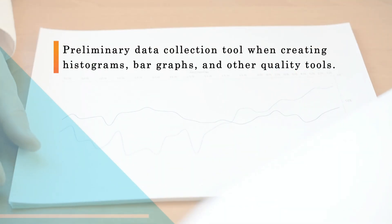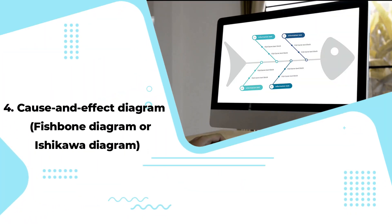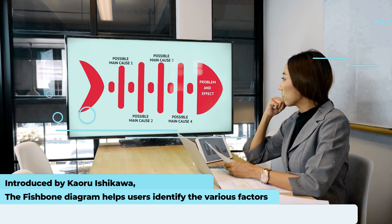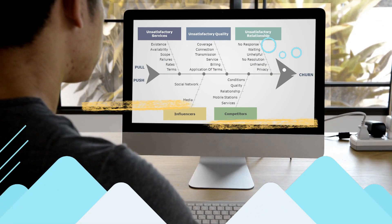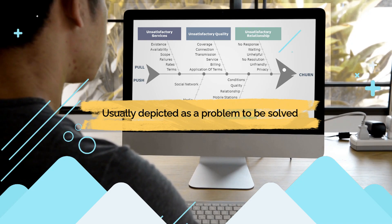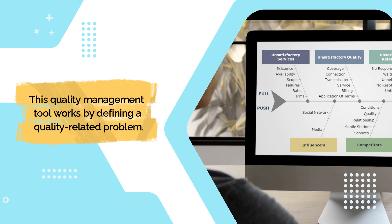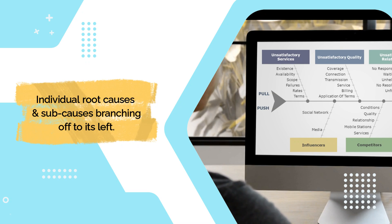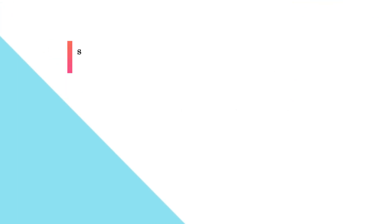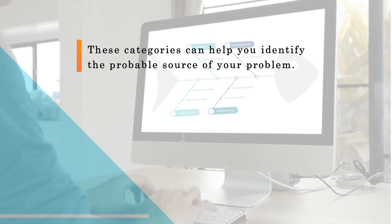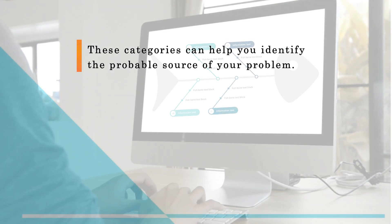Check sheets can be used as a preliminary data collection tool when creating histograms, bar graphs, and other quality tools. Fourth is the cause and effect diagram, also known as a fishbone or Ishikawa diagram. Introduced by Kaoru Ishikawa, the fishbone diagram helps users identify the various factors or causes leading to an effect, usually depicted as a problem to be solved. It works by defining a quality-related problem on the right-hand side of the diagram, with individual root causes and sub-causes branching off to its left. These causes are usually grouped into six main categories: measurements, materials, personnel, environment, methods, and machines.